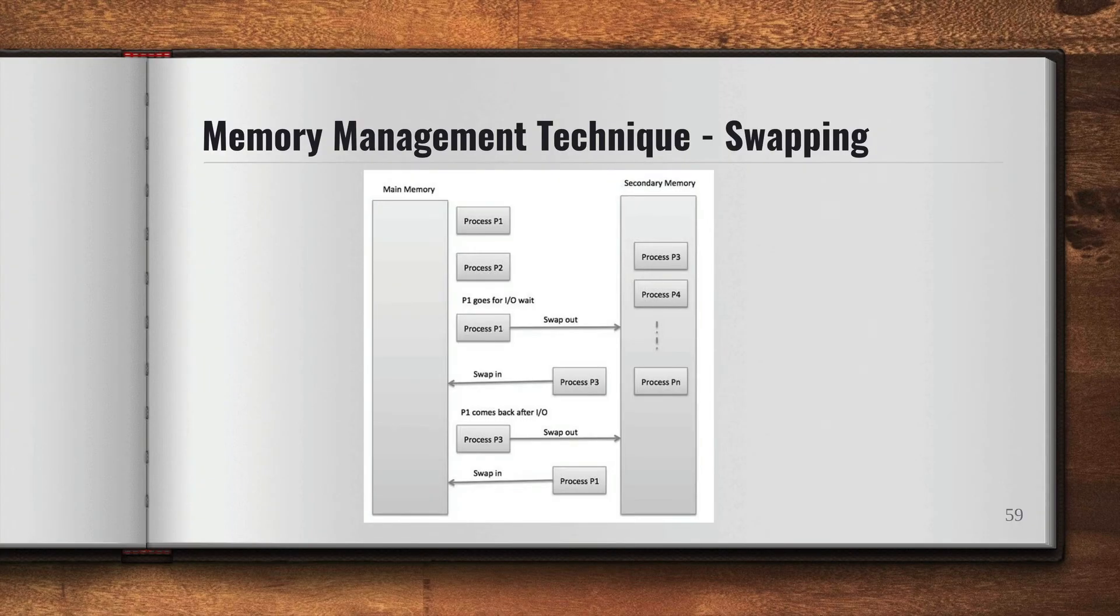Now we're going to discuss the concept of swapping. What is swapping? Swapping is a memory management technique in which any process can temporarily be swapped from the main memory to the secondary memory, and this is done so that the main memory can be made available for other processes.